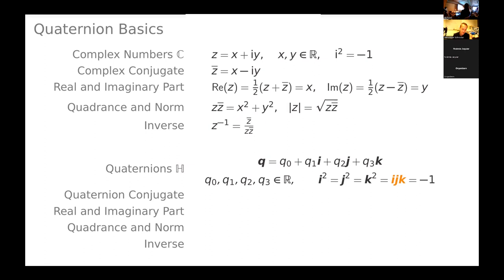Now, quaternions — usually denoted by the symbol H after Hamilton, their discoverer — a quaternion q is an expression with three quaternion units i, j, and k, with coefficients q0, q1, q2, and q3 being real numbers. As with complex numbers, i, j, and k all square to minus one. We also have to handle multiplication of these units with each other, which is determined by the requirement that i times j times k also equals minus one. And we have similar notions to complex numbers: for example, the conjugate quaternion, which I denote with a star.